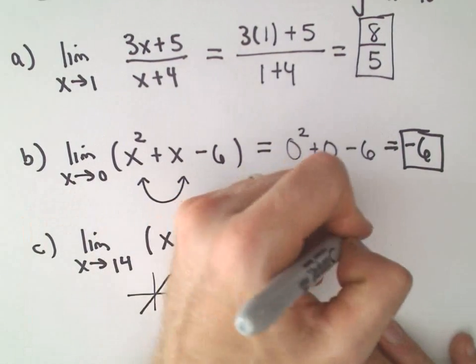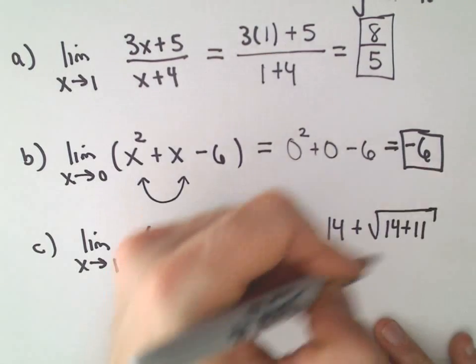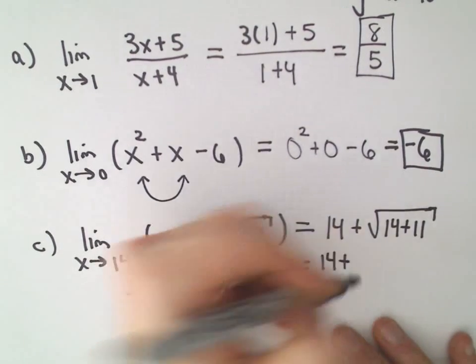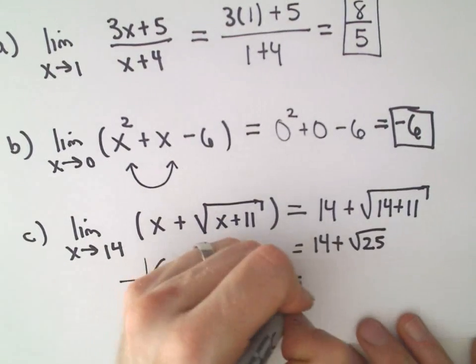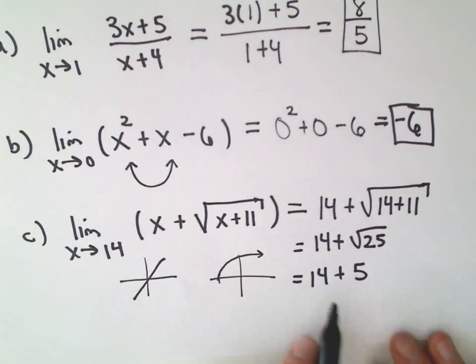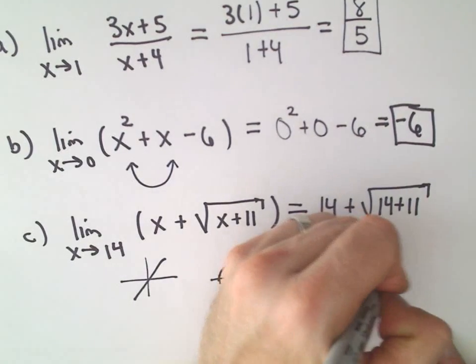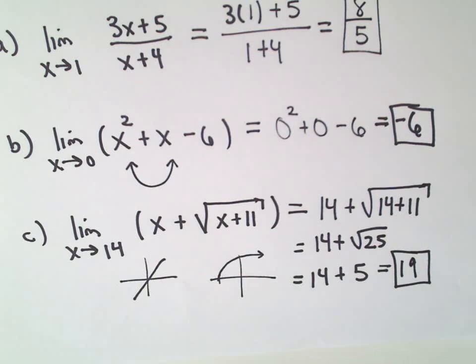So we'll get 14 plus the square root of 14 plus 11. That's going to be 14 plus the square root of 25. The square root of 25 just equals 5. So we get 14 plus 5, or the value to our third limit here would simply just be 19.